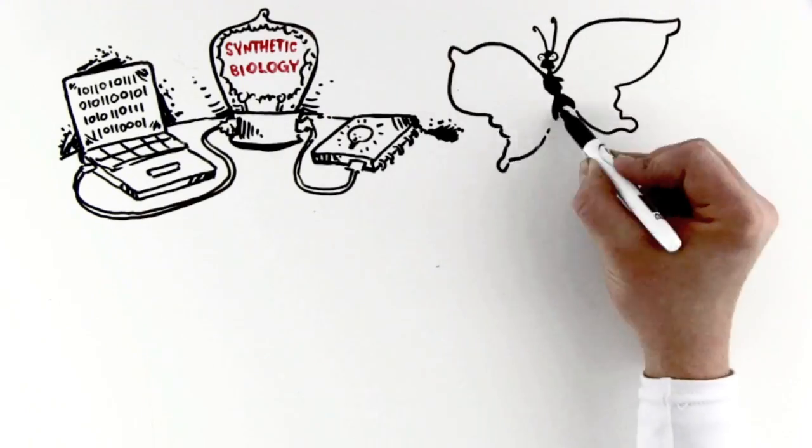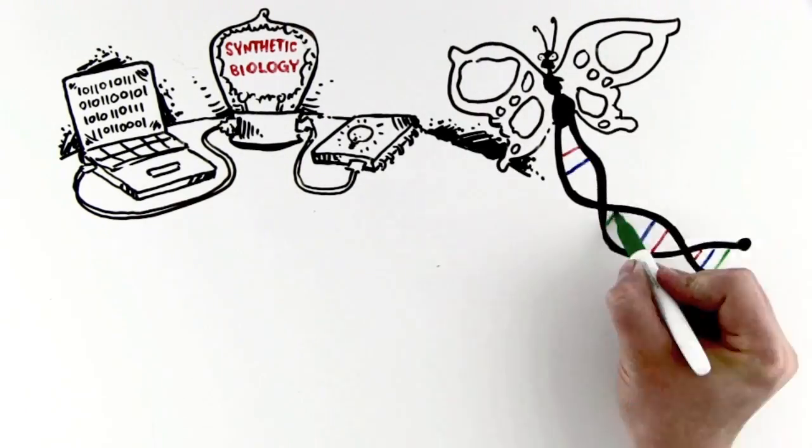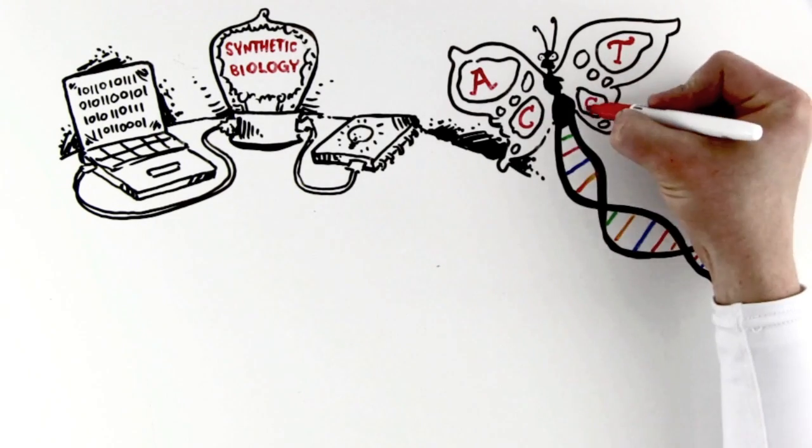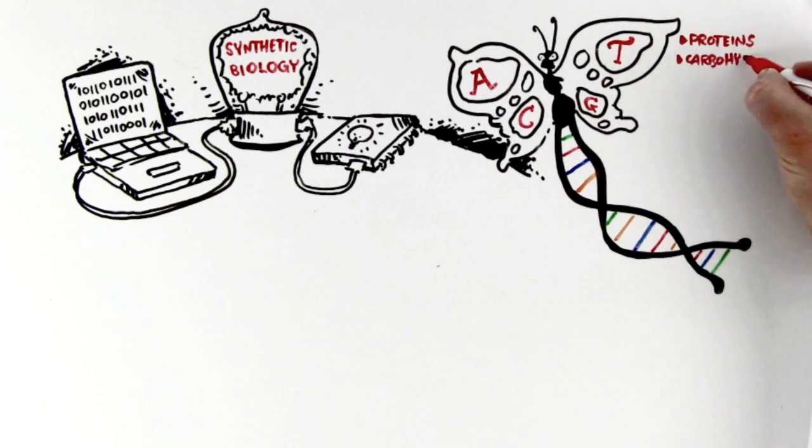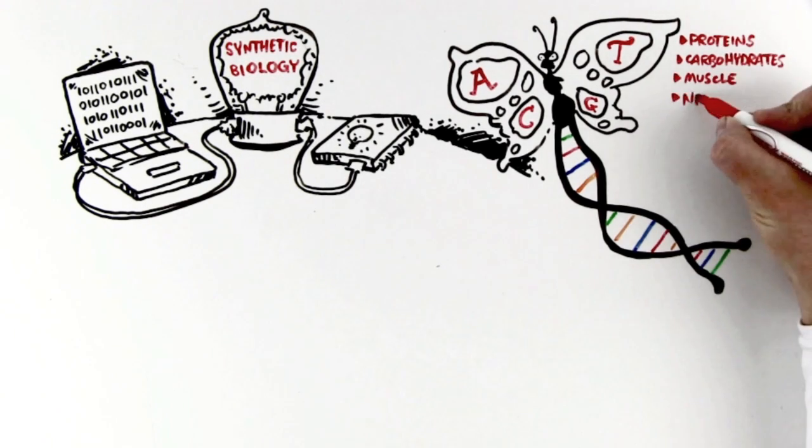Every living organism contains the instruction code of DNA, written in four letters, A, T, C, and G, that directs everything, what proteins and carbohydrates the cell produce, and whether the cell is muscle, nerve, or skin.